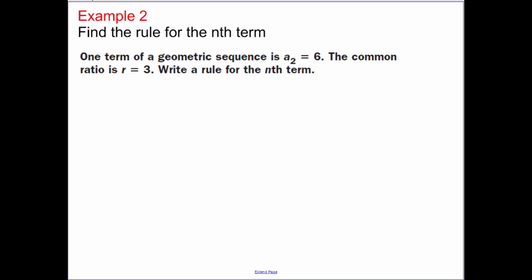Next example. Find the rule for the nth term. One term, our second term, is 6, and the common ratio is 3. Yes, I realize this one is a fairly easy example, but I want us to be able to use this formula. So I'm going to show you guys how to use that formula.